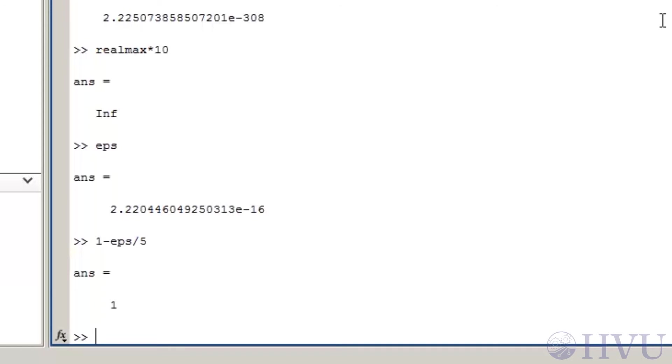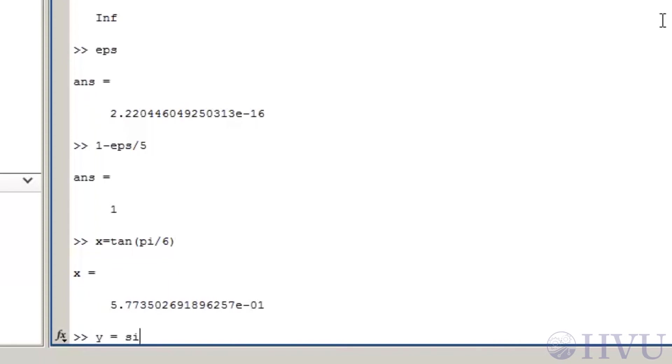As you may guess, one problem associated with finite precision arithmetic is its use in logical operations and decision making. As an example, the tangent of a number is just the ratio of the sine to the cosine of that number. So if I calculate a variable, x equals tan of pi over 6. This should be equal to the sine of pi over 6 divided by the cosine of pi over 6. So I'll create a variable y that's the ratio of the two.